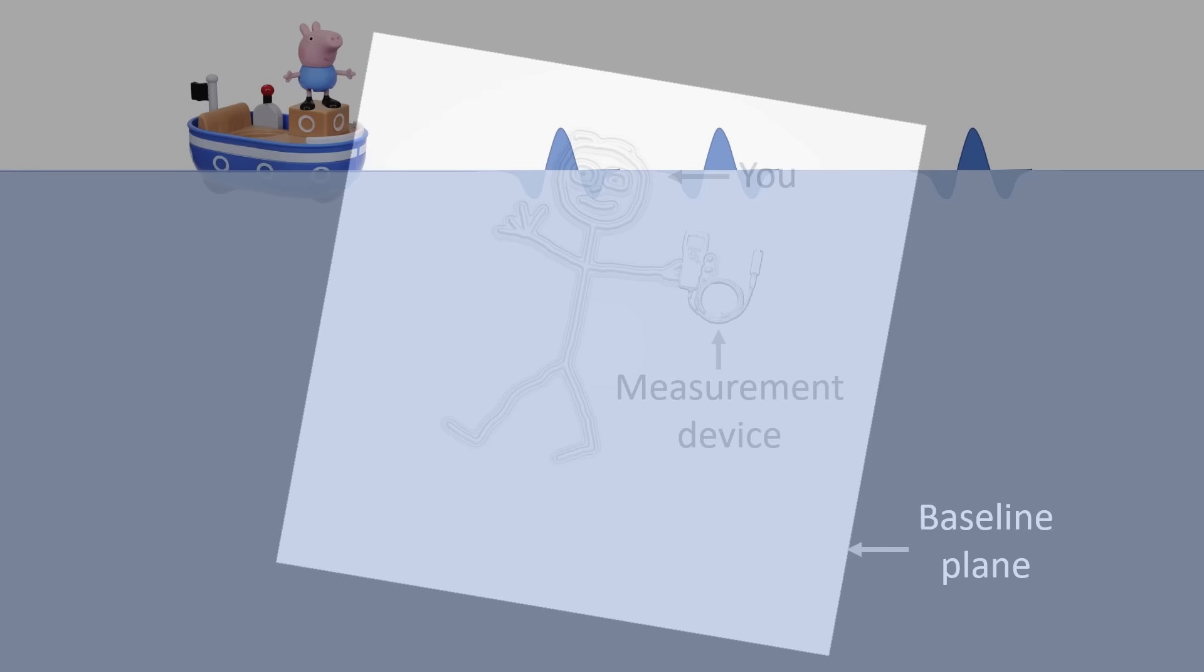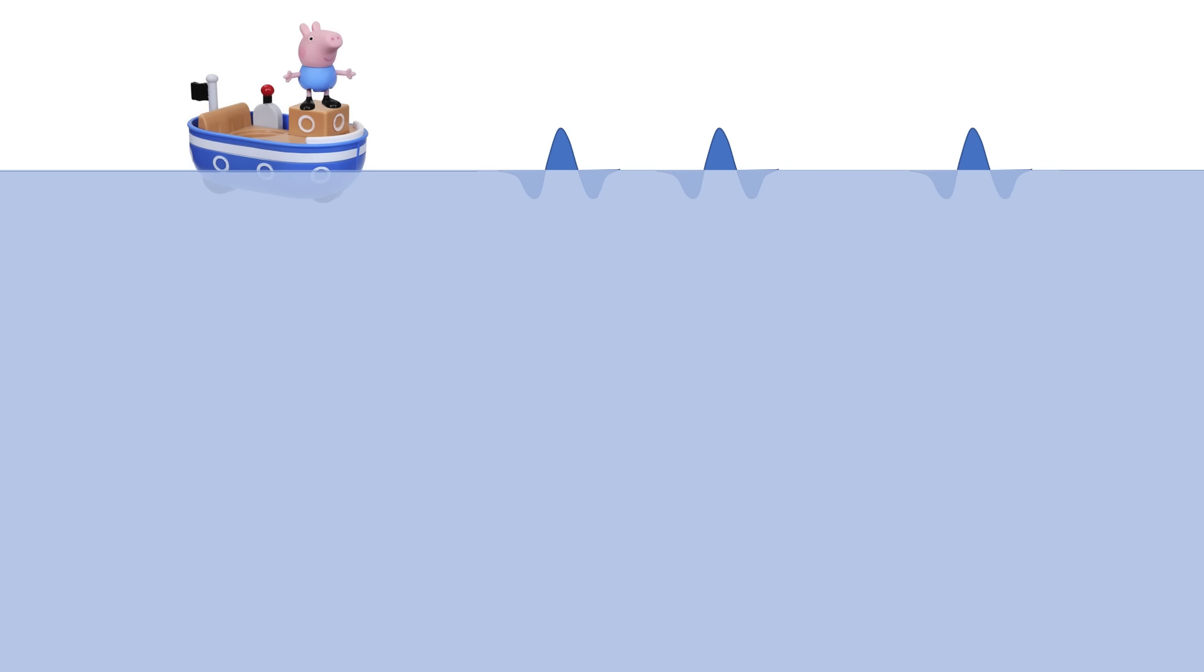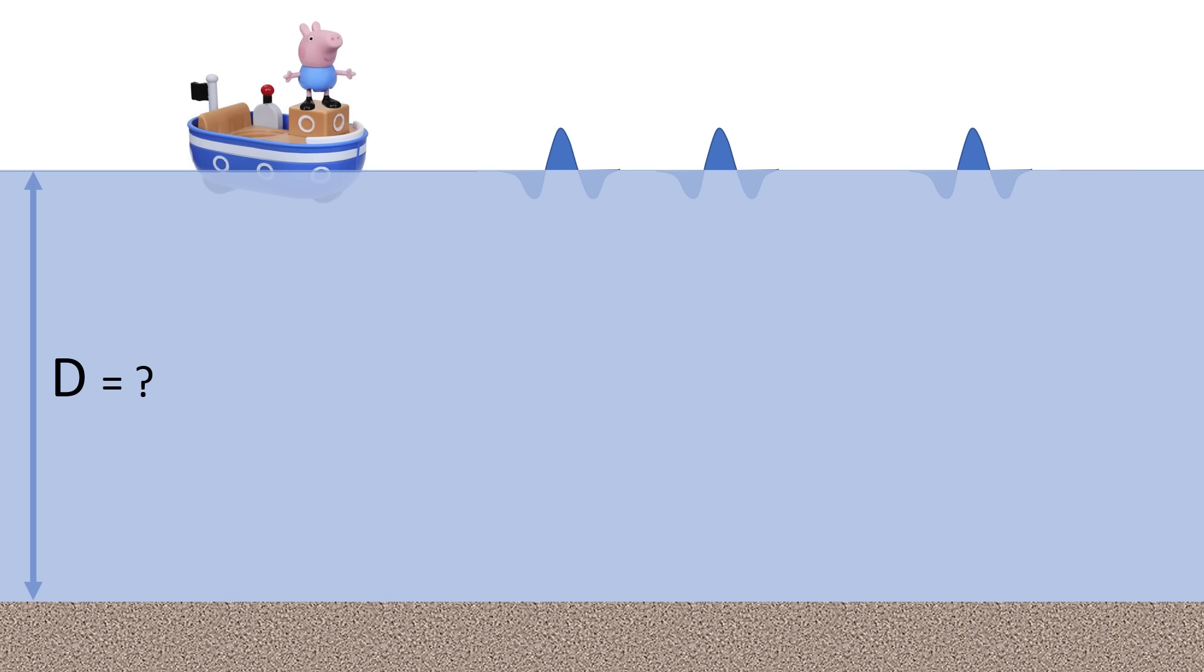Imagine you are on an ocean in a small boat. The water is very muddy and you cannot look beneath the surface. The only thing you can see are these wave phenomena on the surface. You have no clue how deep the ocean actually is. It could be 100 meters deep, or 10,000 meters deep, or maybe more.